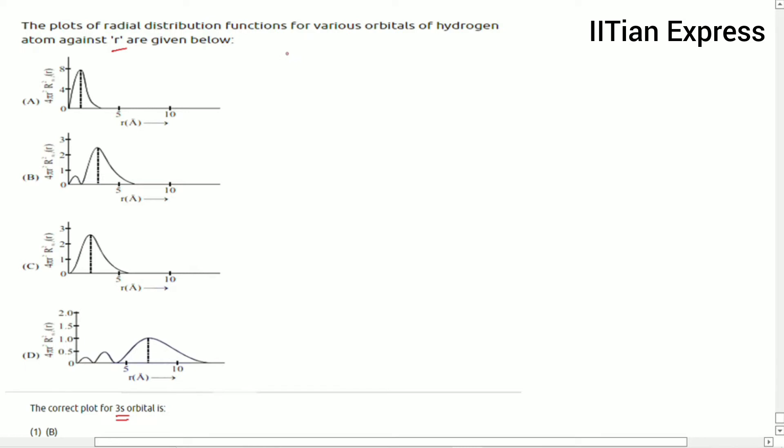Let us consider the 3s orbital. The radial nodes for 3s orbital equals n minus l minus 1.